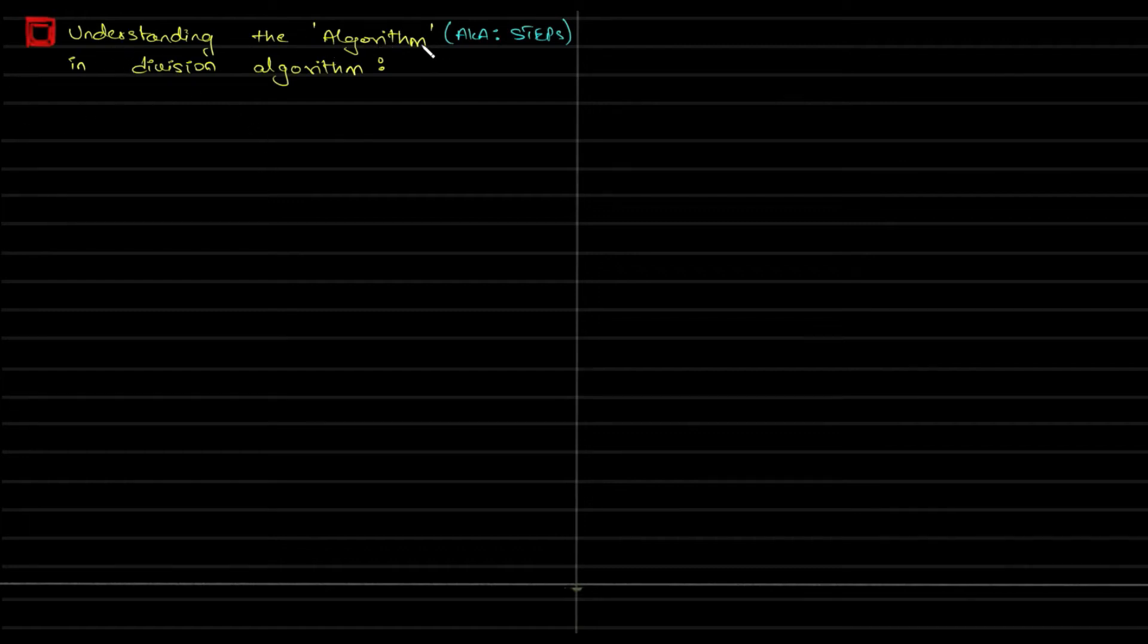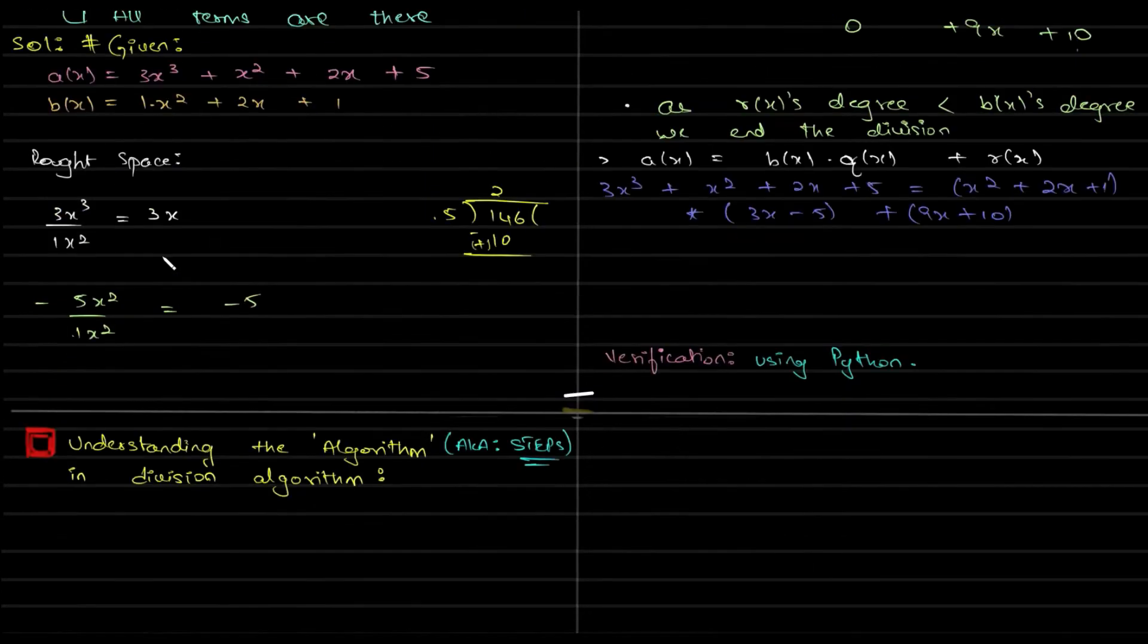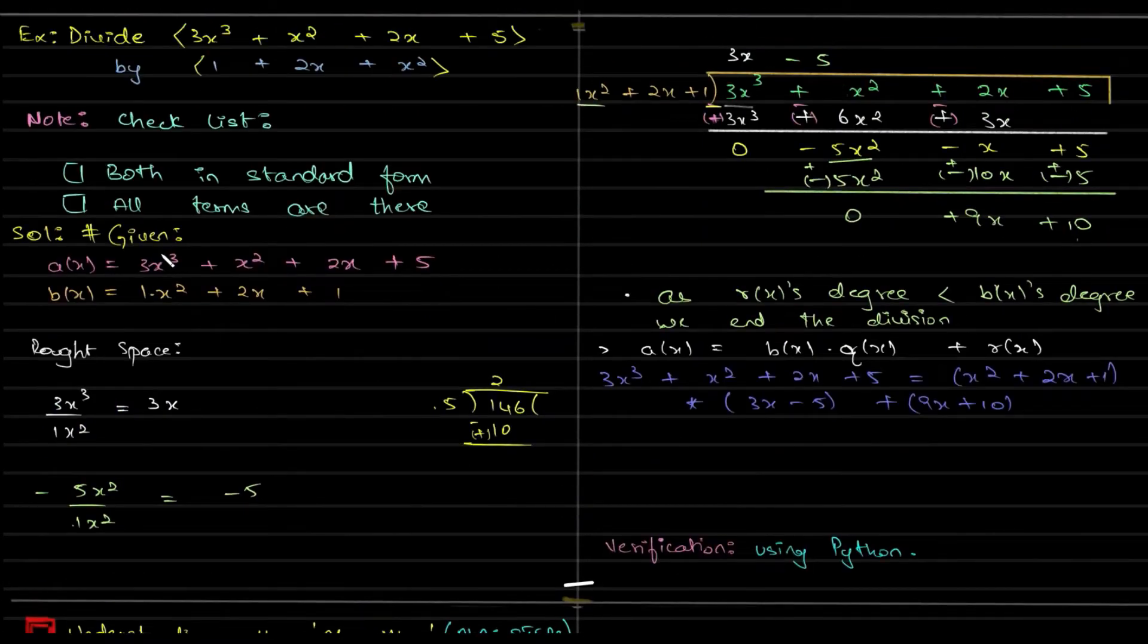Let us understand the algorithm, that is the steps in division algorithm. Division of polynomials is quite kind of confusing for many. The process is kind of confusing for many.